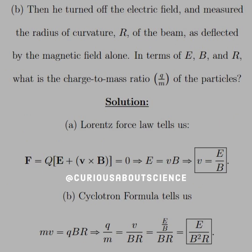And then Part B, then he turned off the electric field and measured the radius of curvature R of the beam as deflected by the magnetic field alone. In terms of E, B, and R, what is the charge to mass ratio Q over M of the particles?